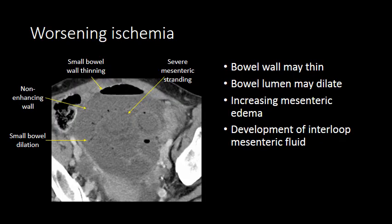As you see the ischemia worsen, you will see small bowel wall thinning and a non-enhancing small bowel. As the wall thins and ischemia progresses, the small bowel will often dilate due to inability to peristalse, and you will begin to see severe mesenteric stranding or mesenteric edema. You can also start to see interloop mesenteric fluid, which is fluid accumulating under the leaflets or layers of the mesentery adjacent to the ischemic segments of bowel.